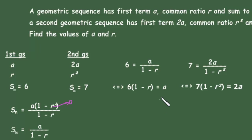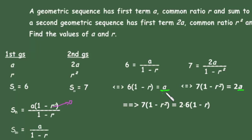We have a system of two equations with two unknowns, but we've already isolated a. So we can take a = 6(1 minus r) and substitute it into the second equation. Replacing a gives us: 7(1 minus r squared) = 2 times 6 times (1 minus r), which simplifies to 7(1 minus r squared) = 12(1 minus r).